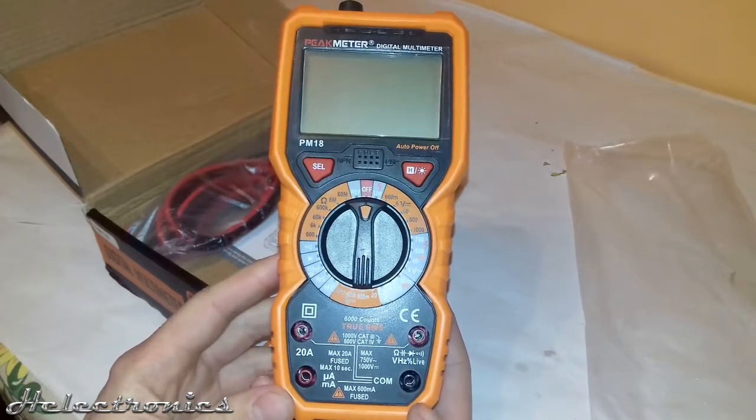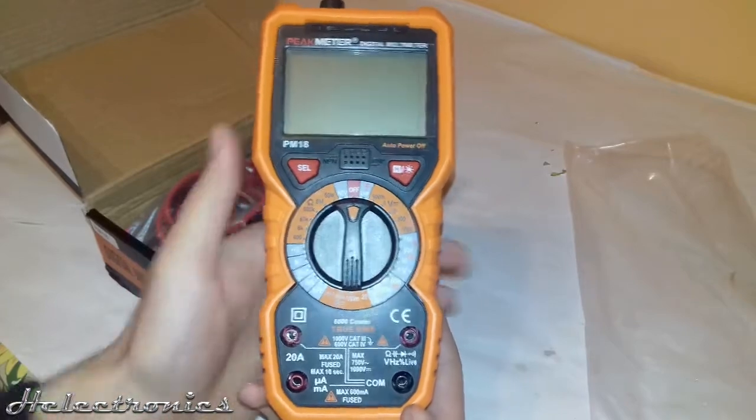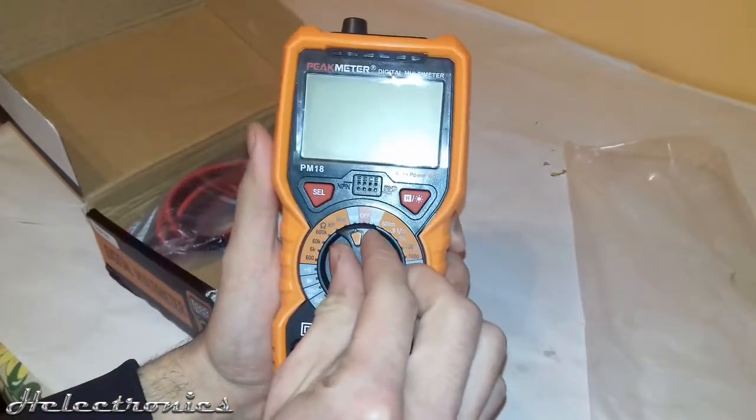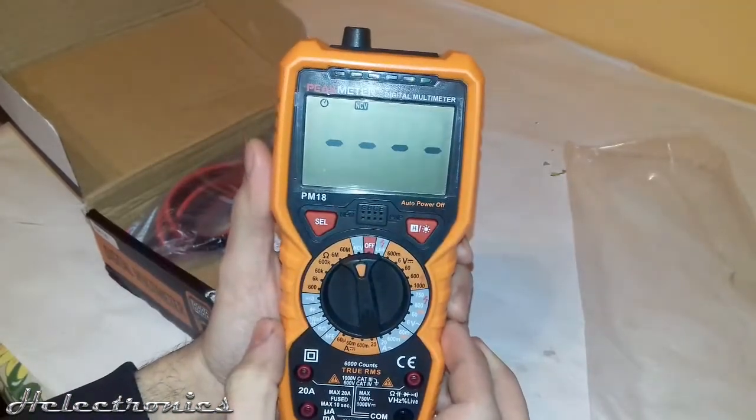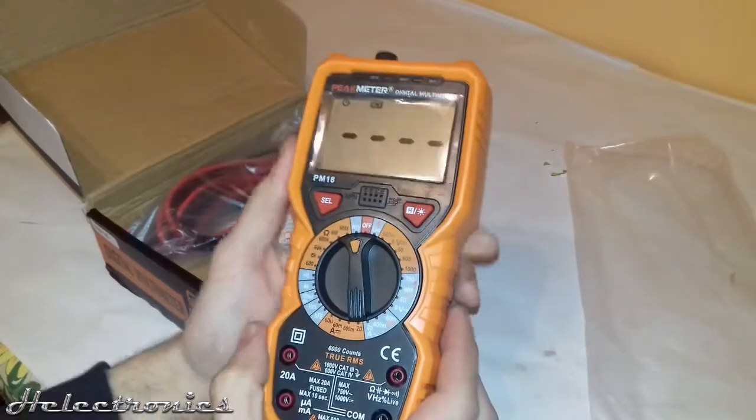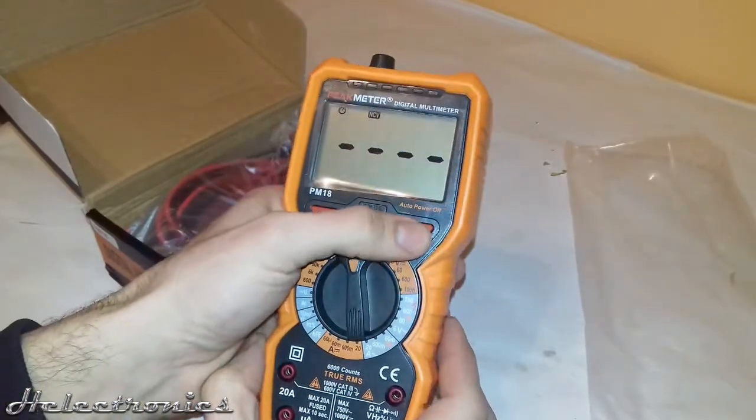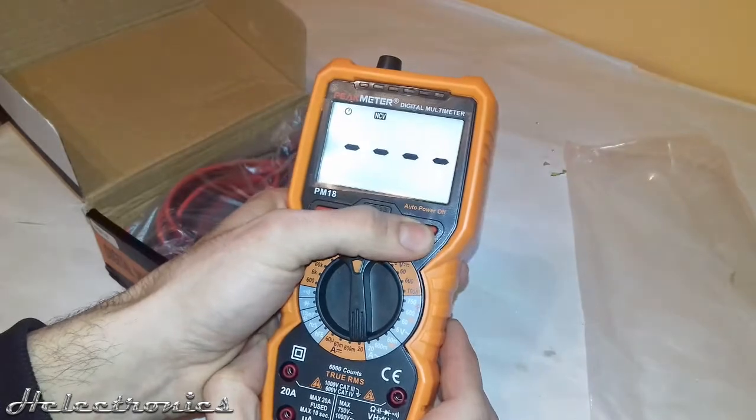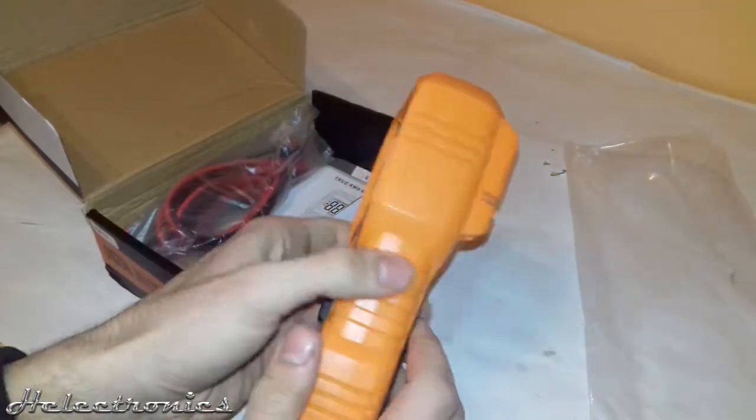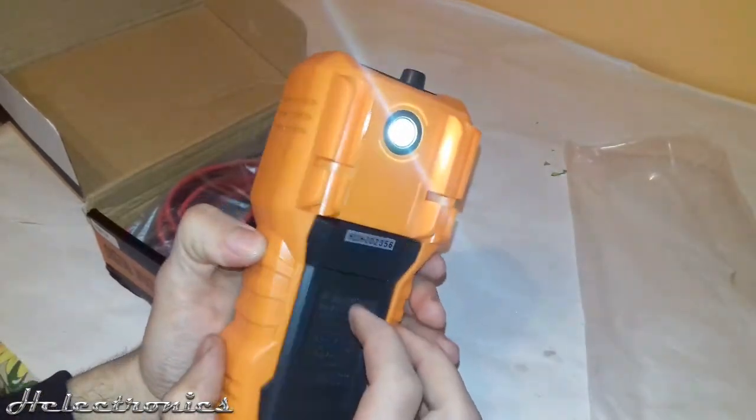Let's turn it on. This multimeter has automatic power off function, which means that over time if no action is done, it will turn off automatically. Now I turn on the backlight also. The button must be pressed for about five seconds. This operates the backlight and also the flashlight.